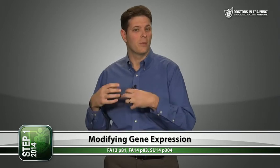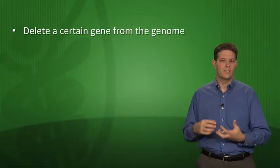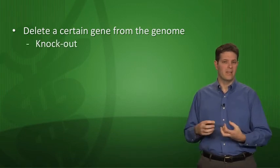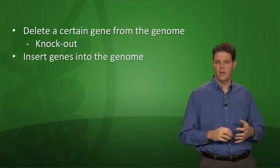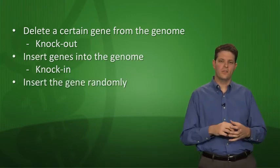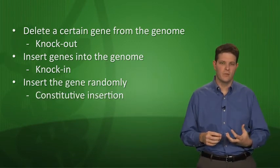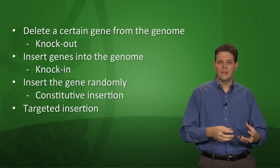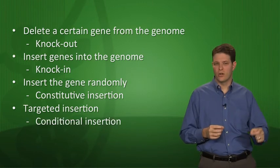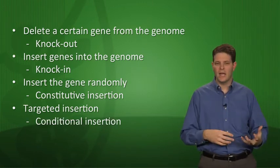Let's shift gears a little bit and talk about genetic engineering and making modifications to gene expression. We're still talking about lab techniques, but instead of analyzing DNA sequences, now we're actually manipulating the genetic code of an experimental animal like a mouse. So you can either delete a certain gene from the mouse's genome and that's called a knockout mouse because you knocked that gene out, or you can insert genes into the mouse's genome and that's called a knockin mouse. Now if you insert the gene randomly, it's called a constitutive insertion. But if you do a more targeted insertion, putting the gene exactly where you want it because it's structurally homologous to the native mouse gene, that's called a conditional insertion.